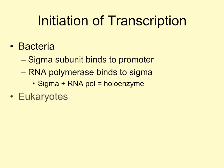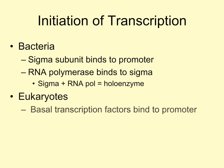In eukaryotes, many proteins called basal transcription factors bind to the promoter, and then RNA polymerase binds. The RNA polymerase of eukaryotes does not bind to the basal transcription factors to create the holoenzyme; however, the basal transcription factors and RNA polymerase perform the same basic functions as the holoenzyme seen in bacteria.